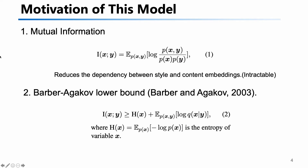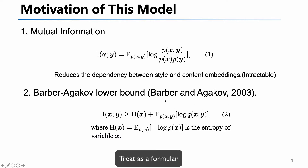The motivation of this model is to use the mutual information between the style and the content of the sentence. This is the formula of mutual information. We can calculate it in this way, and for the property of mutual information, it has a lower bound which we can treat as a formula.